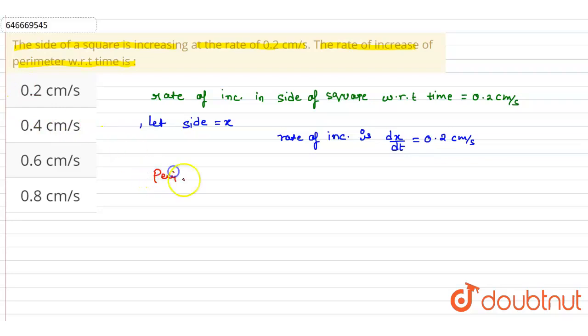Now we have to talk about perimeter. So perimeter of a square is 4x. So the perimeter of a square is totally dependent on x. So x is increasing with rate of 0.2 centimeter per second.